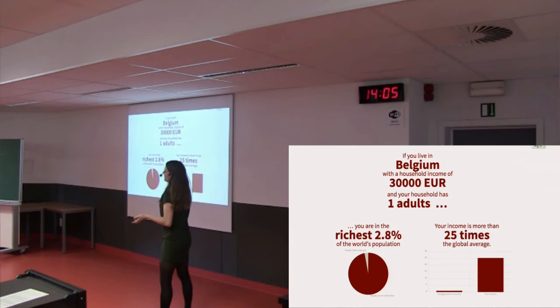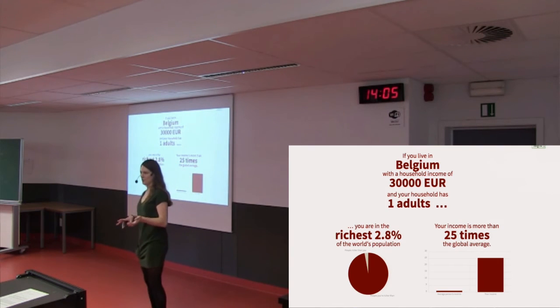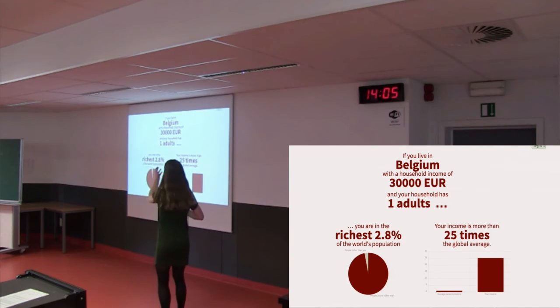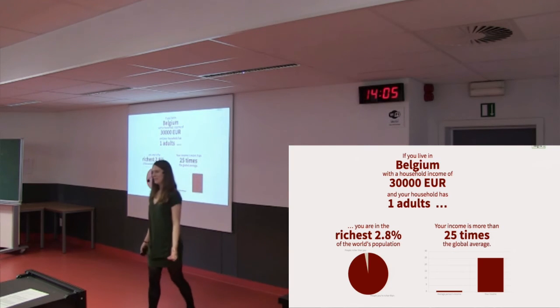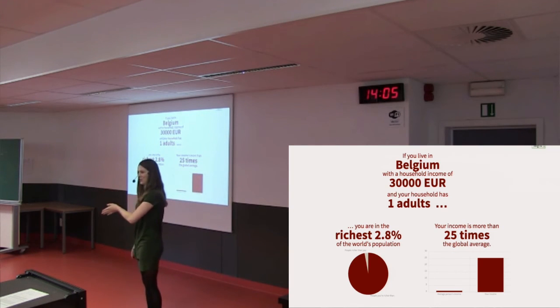So, if you live in Belgium and you have a pretty average income, so I've taken the median income level for people who are very similar to us in Belgium, so about 30,000 euros, then that puts you in the richest 2.8% of the world's population. And that means your income is more than 25 times the global average. So, really, it's not just those fat cats on Wall Street who should be doing a lot of good. It's people like you and me. We are the global elite in some sense, and we should give back as well.